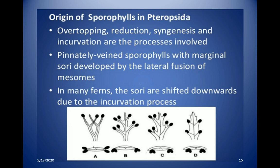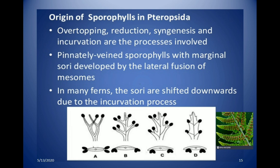Pinnately veined sporophylls with marginal sori developed by the lateral fusion of mesomes. It is now clear how the five important processes — overtopping, reduction, syngenesis, planation, and curvation — play an important role in describing the origin and evolution of vascular plants from simple rhynia-type plants.